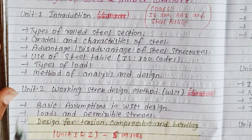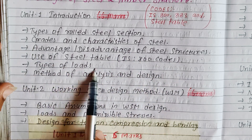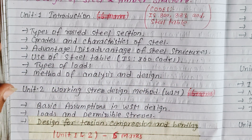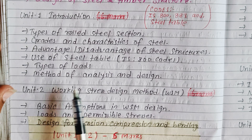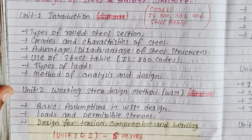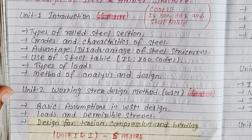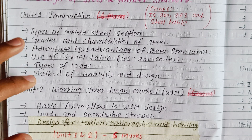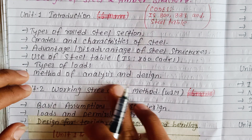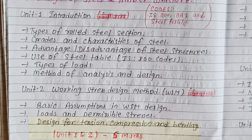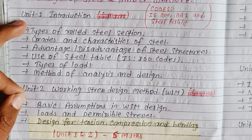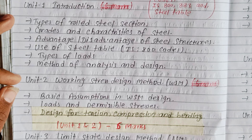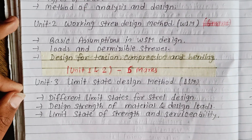Unit 1 also covers types of loads — dead load, live load, wind load — and the method of analysis and design. Analysis using cosine analysis and design methods are included as part of the introduction to steel structure design.